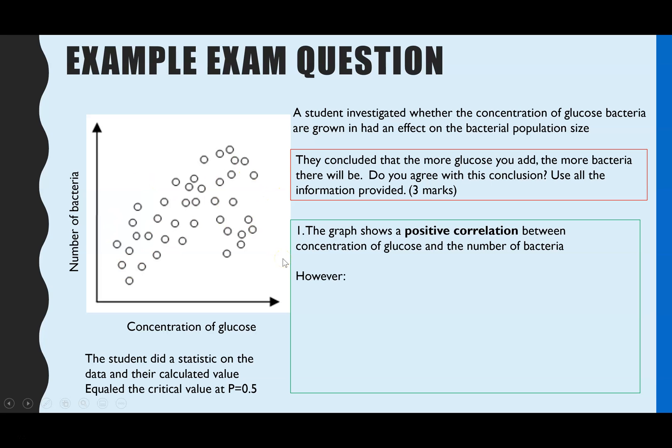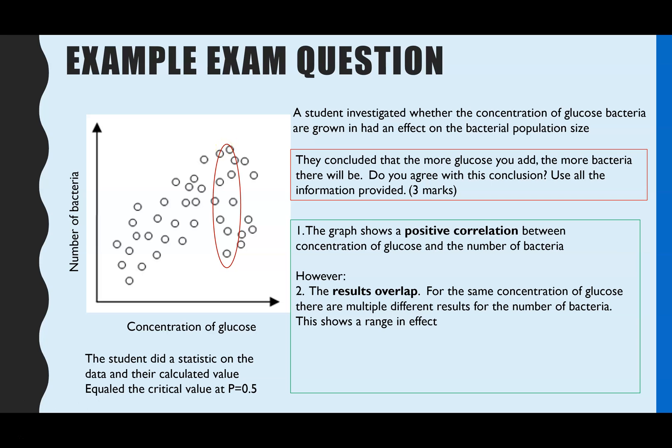However, you can see on this graph that the results overlap. And what we mean by that is, for the same concentration of glucose, there are multiple different results for the number of bacteria. And what that means is, there was a big range in effect. So that would be evidence that would make you doubt that that conclusion was valid.